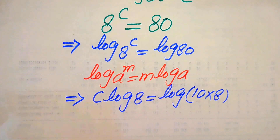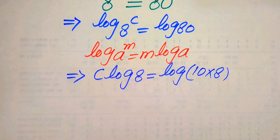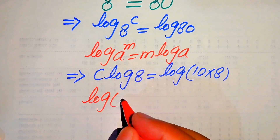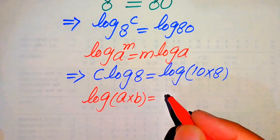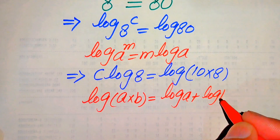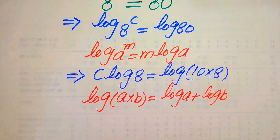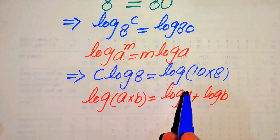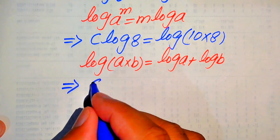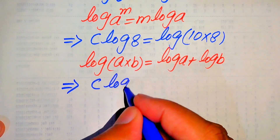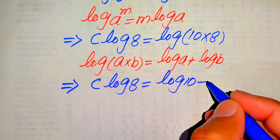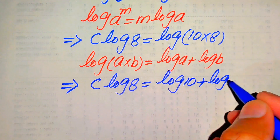Further, in the next step, we use another property of log on the right hand side. We know that log of A multiplied by B equals log A plus log B. According to this property, we write the right hand side as: C times log 8 equals log 10 plus log 8.